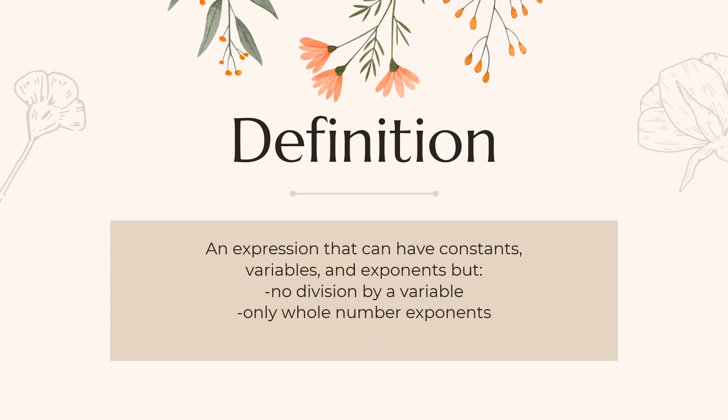The definition of a polynomial: we've dealt with trinomials and binomials, but a polynomial is an expression that can have constants, variables, and exponents — but there's going to be no division by a variable, and only whole number exponents. So no negatives and no fractions as exponents.